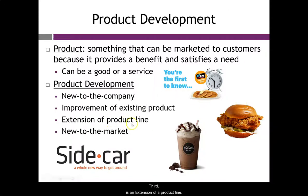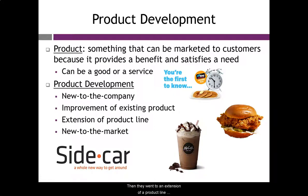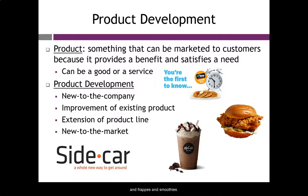Third is an extension of a product line. You can use the example of McDonald's McCafe. McDonald's always had coffee and shakes, but then they went to an extension of their product line — something new that's really a variation of an existing product. With their McCafe line, they added mocha, cappuccino, fraps, and smoothies. So that's the third product development category: extension of product line.